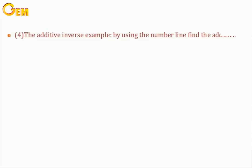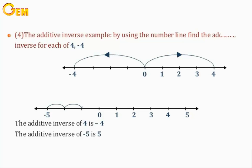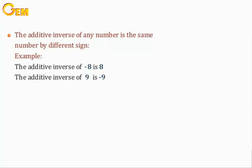Number 4: The additive inverse. By using the number line, find the additive inverse for each of 4 and negative 4. The additive inverse of 4 is negative 4, and the additive inverse of negative 5 is 5. The additive inverse of any number is the same number with a different sign. For example, the additive inverse of negative 8 is 8, and the additive inverse of 9 is negative 9. Note that any number plus its additive inverse equals 0. The additive inverse of 0 is 0 itself.